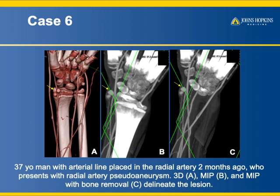Another example: a patient who had an arterial line placed via the radial artery now has a radial artery pseudoaneurysm — almost a bilobed pseudoaneurysm. Bone removal is critical, especially with MIP, but with any technique it makes the images so much better.